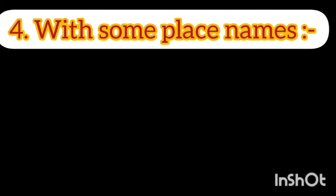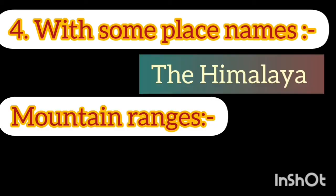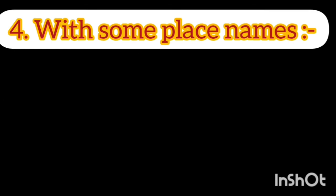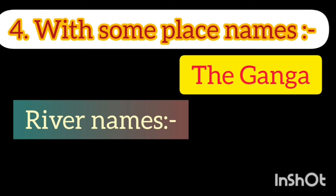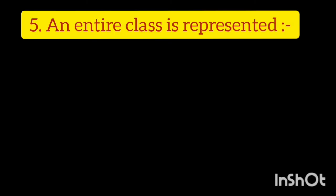Now, let's move on to the next use of the, which is referring to place names. For example, mountain ranges: the Himalaya, the Alps. River names: the Ganga, the Yamuna.